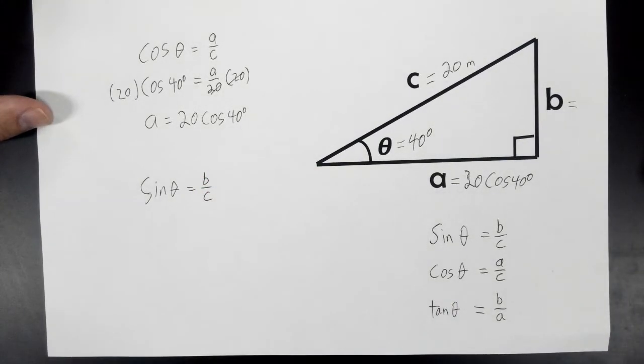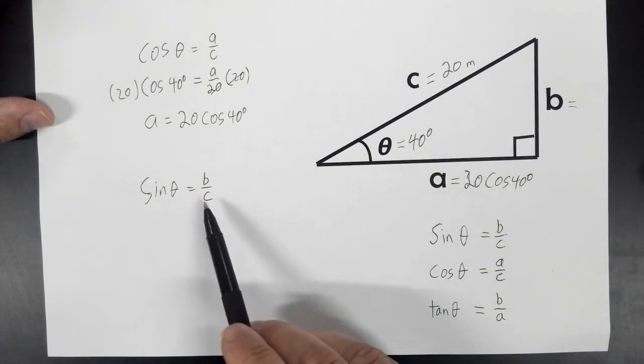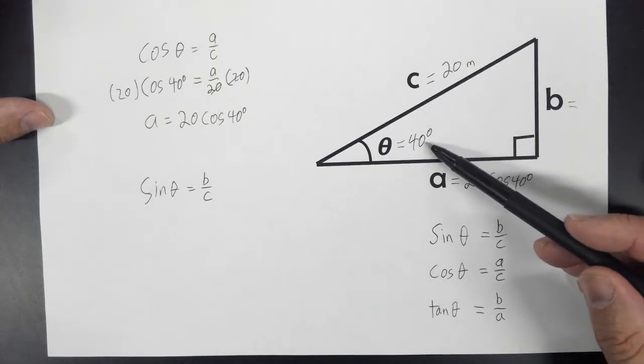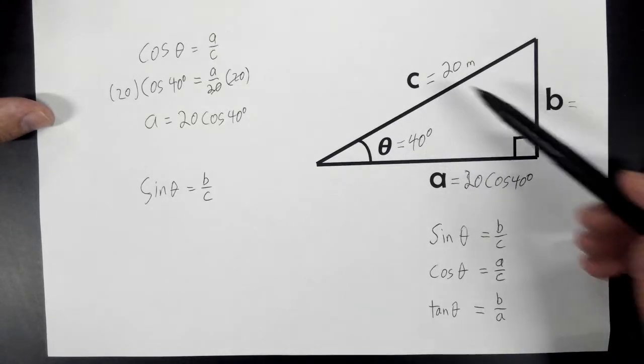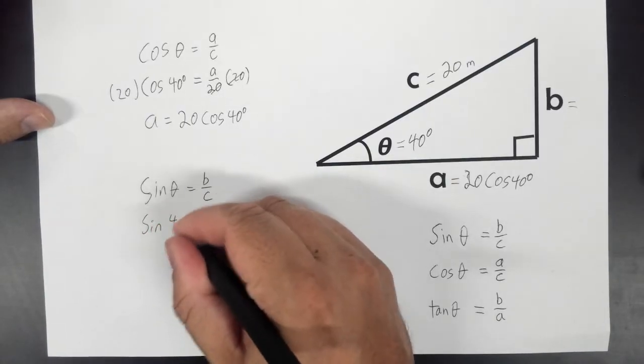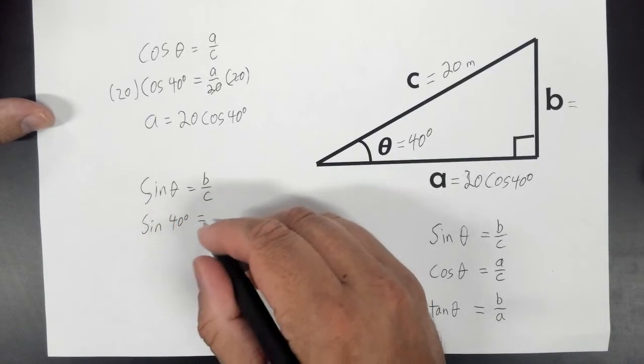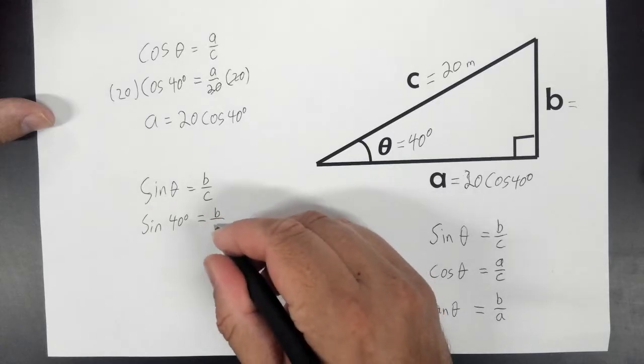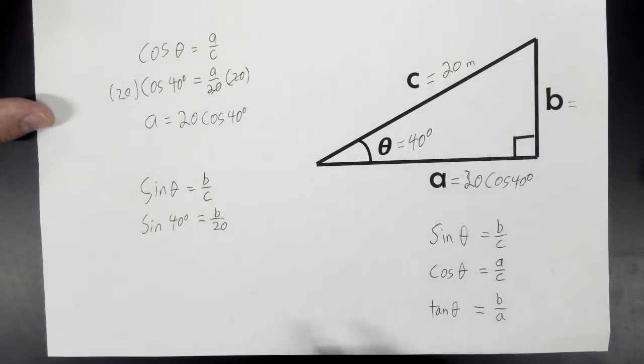So there's the equation. Once again, I'll replace the unknowns with the things we know. We know the angle is 40 degrees, and we know that C is 20. So sine 40 degrees equals B over 20.